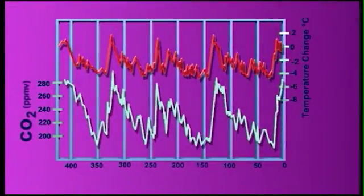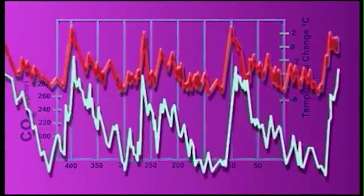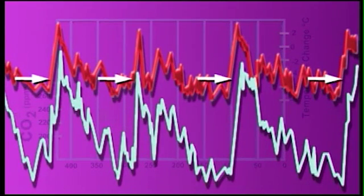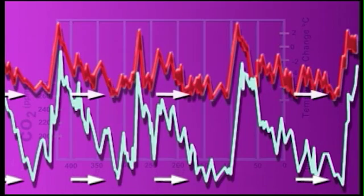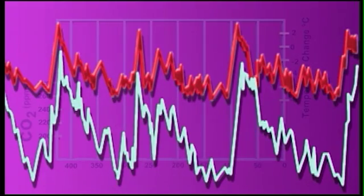When we look at the history of the climate, what we find is that whenever CO2 has been high, it's been warm. And whenever CO2 has been low, it's been cold. And we can't explain the size of the temperature changes unless more CO2 makes it warmer.